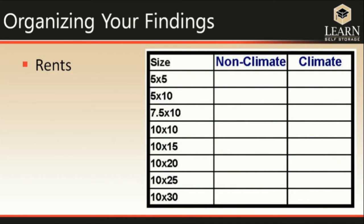In order to organize your findings, you'll need to create some tables. This first one is a perfect example of how you can organize the rents — separated into non-climate and climate-controlled units, and broken down by unit sizes: 5x5, 5x10, 7.5x10, 10x10, 10x15, 10x20, 10x25, and 10x30. These are the average unit sizes. If you're considering a different unit mix, look for facilities that offer similar sizes.